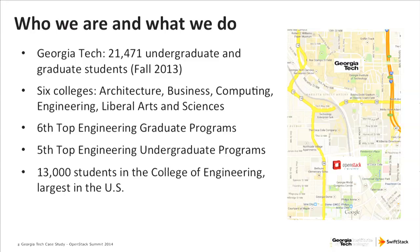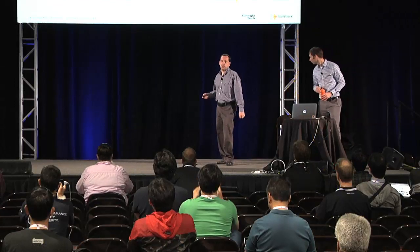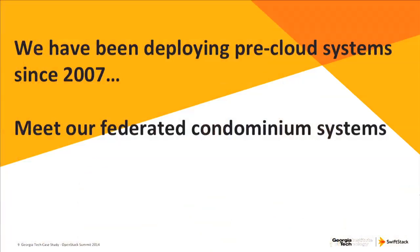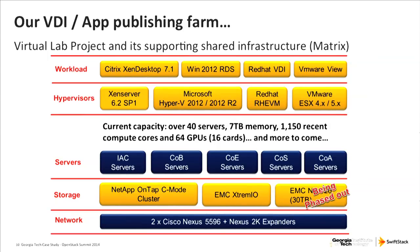Georgia Tech is a university located a few miles from here. We have a lot of students in engineering and we do cool stuff. Before OpenStack, before the public-private hybrid cloud, we had what we called our federated condominium systems — forms oriented toward VDI and applications where research groups and IT departments can bring servers. In exchange, we have a platform as a service where our IT groups can publish applications to students as part of virtual labs.